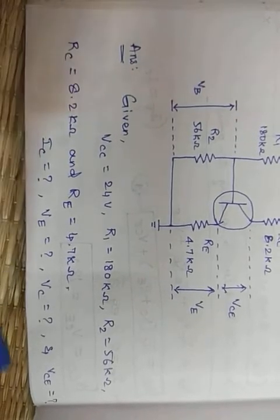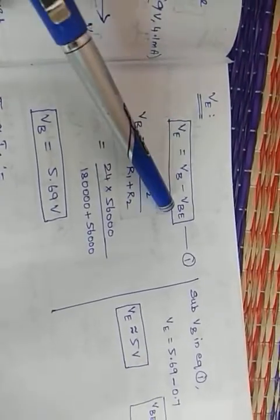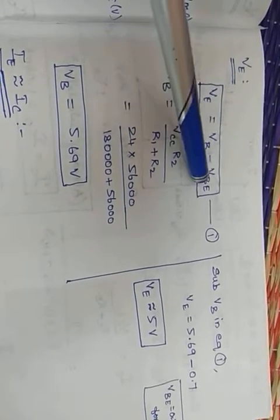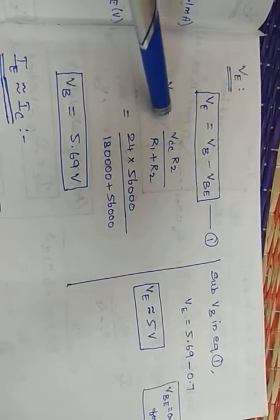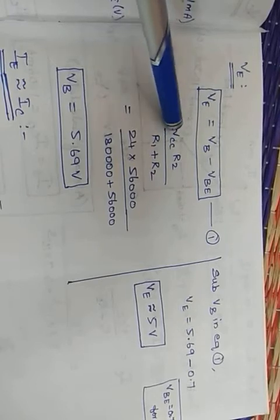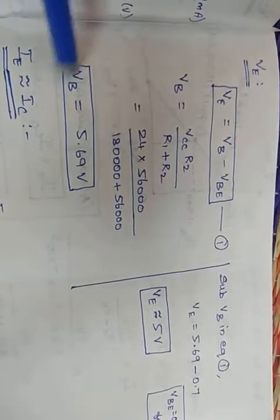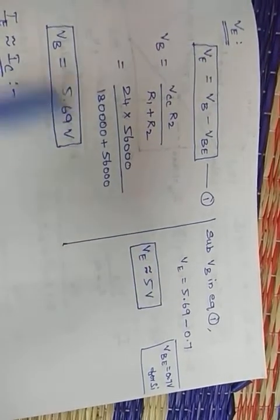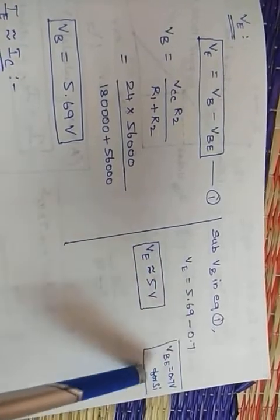We start with VE. VE = VB − VBE. VBE by default is 0.7V for silicon. To find VB: VB = VCC × R2 / (R1 + R2). Substituting the values, VB = 5.69V. Substituting into the equation, VE = 5.69 − 0.7.